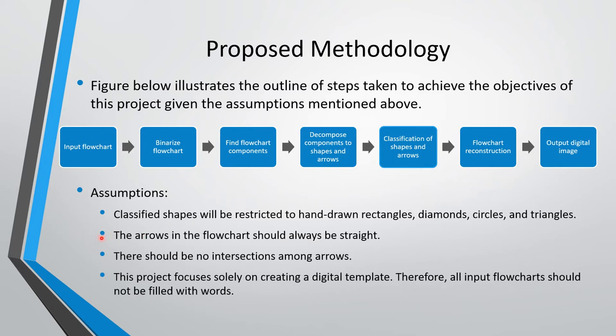To make this project achievable as a course project, the following assumptions will be made. Classified shapes will be restricted to hand-drawn rectangles, diamonds, circles, and triangles. The arrows in the flowchart should always be straight. There should be no intersection among arrows and the project focuses solely on creating a digital template. Therefore, all input flowcharts should not be filled with words.